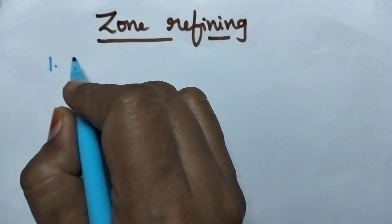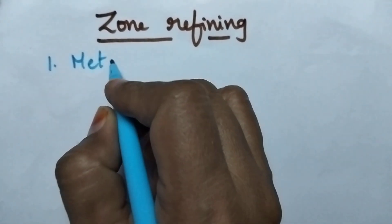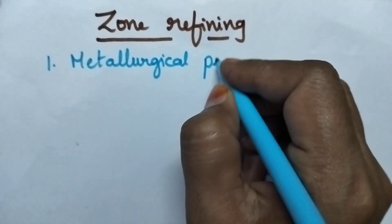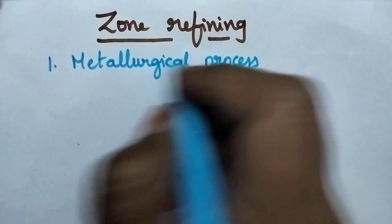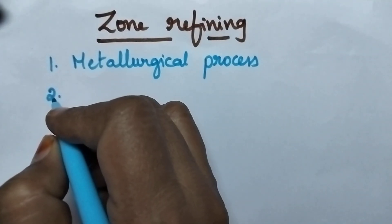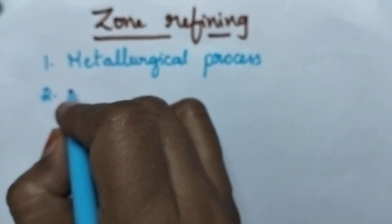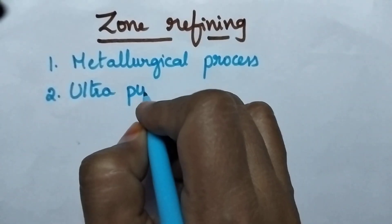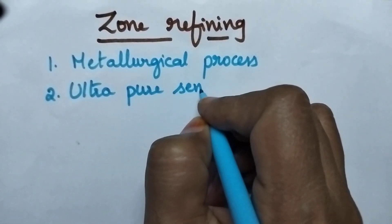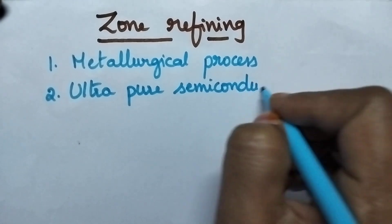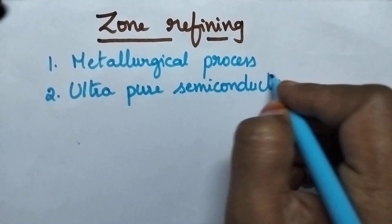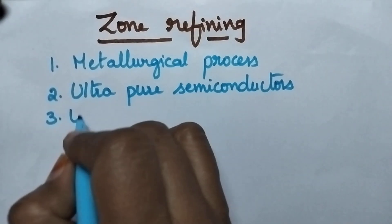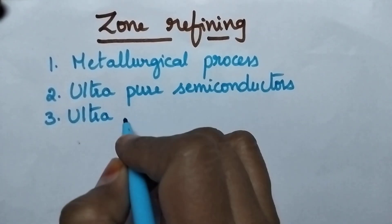Zone refining is one of the metallurgical processes. It is highly useful for the preparation of ultra pure semiconductors. This method is especially useful for the preparation of ultra pure germanium.